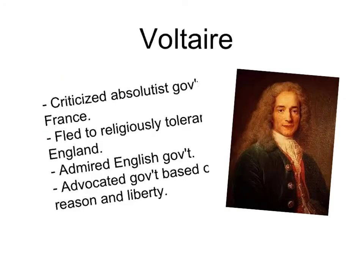One of the centers of Enlightenment thought during the 18th century was France. One of the first of the philosophes — French philosophers — was Voltaire, who criticized the absolutist government that had been developing in France over the previous several centuries in response to the chaos of the religious wars. Because of this, he was imprisoned for a time and then later fled to religiously tolerant England. He admired English government with its constitutional balance and religious toleration, and advocated government based on reason and liberty, building upon the constitutional ideas of John Locke.